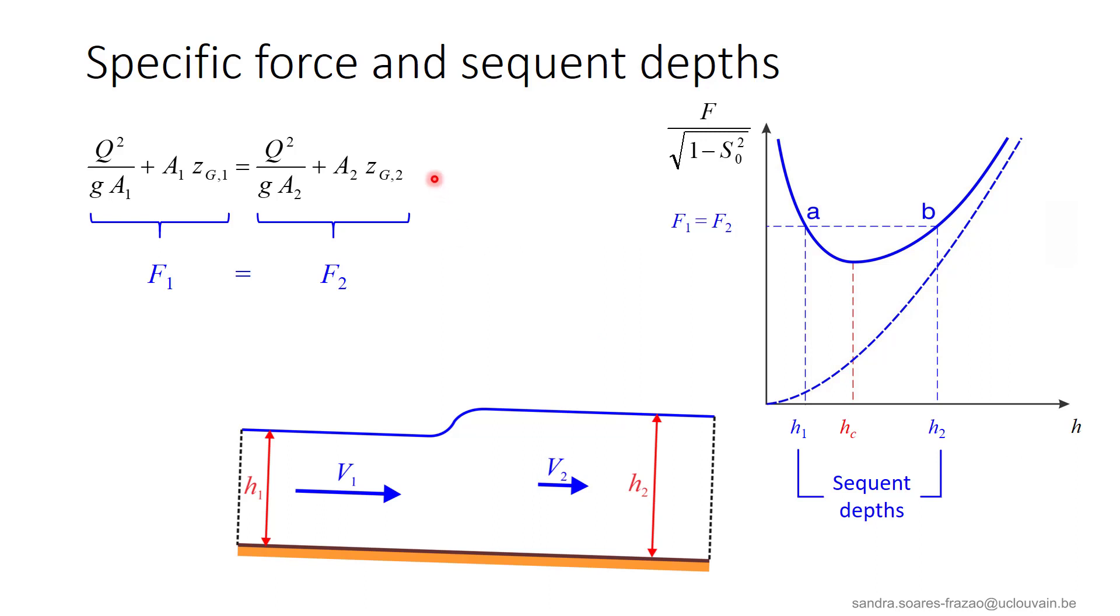The sequent depths are situated on either side of hc. h1 is below hc, while h2 is above hc. We will now see how to calculate this depth.